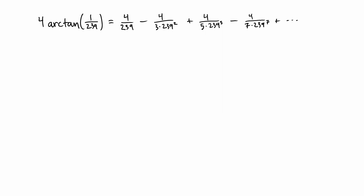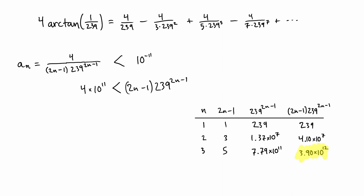We may construct a similar inequality for 4 arctan of 1/239th, given its 10 to the minus 11 error budget. By similar considerations, we may find n equals 3 is the smallest solution to the inequality. Hence, two terms gives a sufficient approximation.